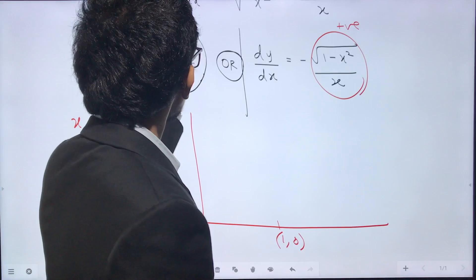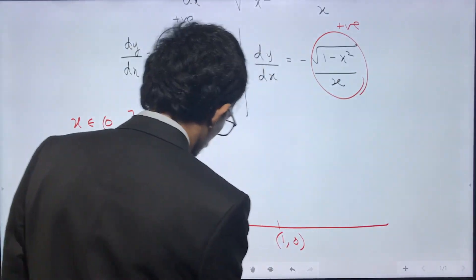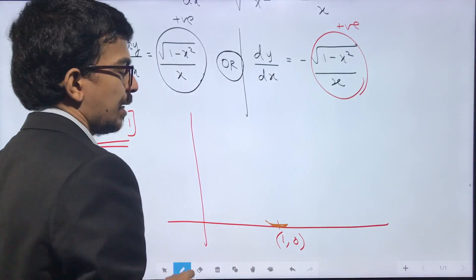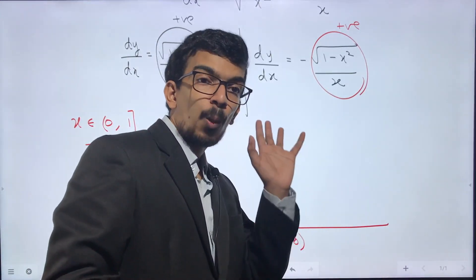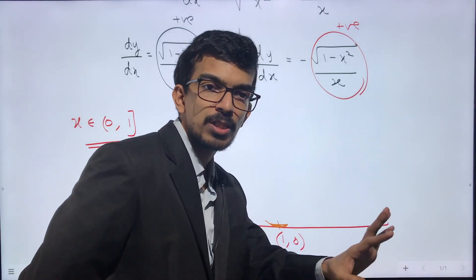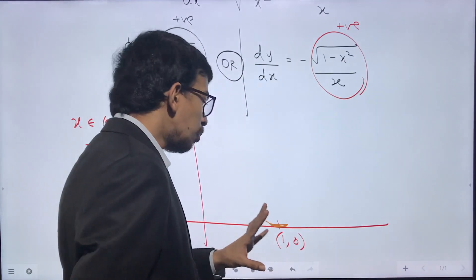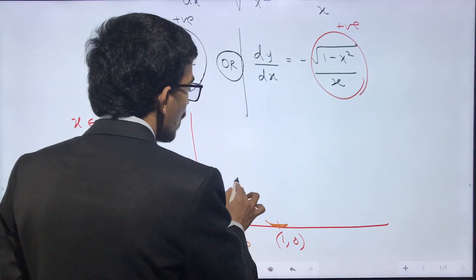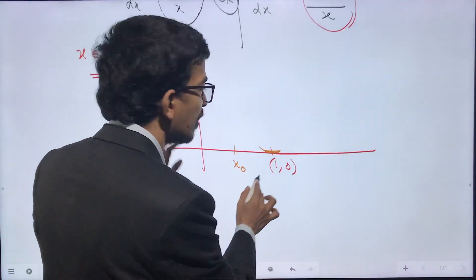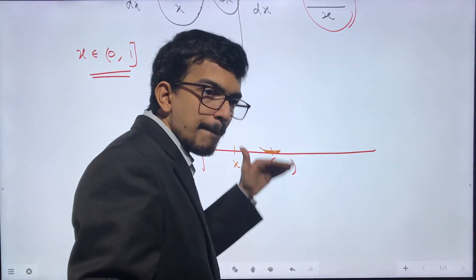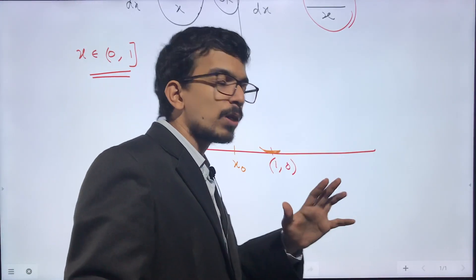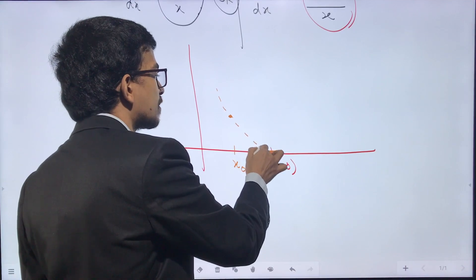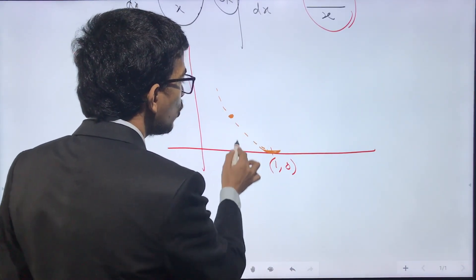At x = 1, the derivative is zero — the curve is touching the x-axis at that point. Throughout the domain, the derivative is entirely positive or entirely negative. For any x₀ in (0, 1), the value of the function must be positive since the curve lies entirely in the first quadrant — so the curve comes down from some positive y-value to zero at x = 1.